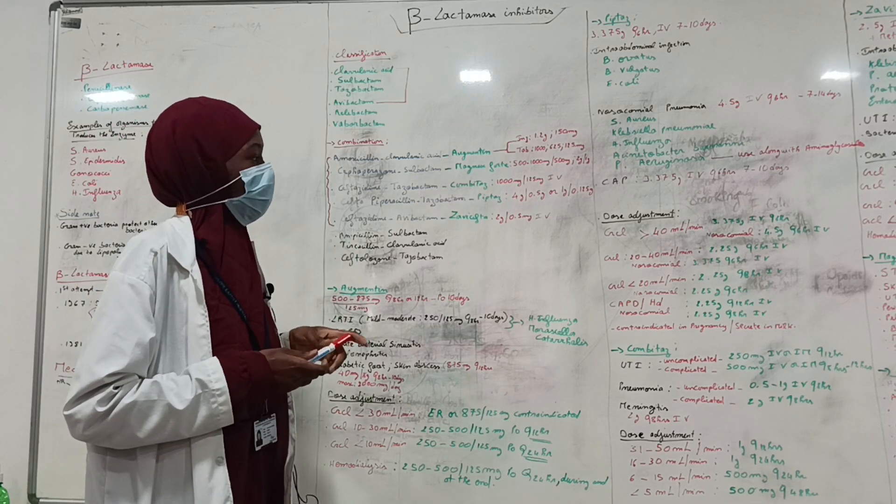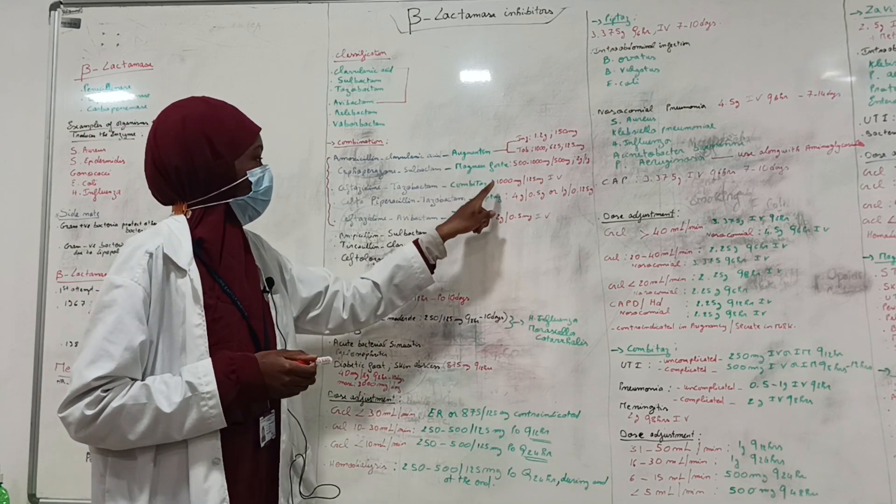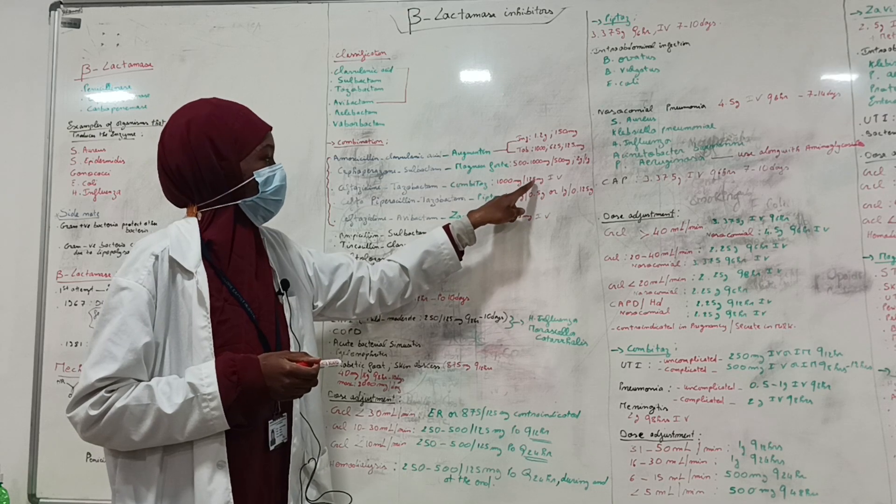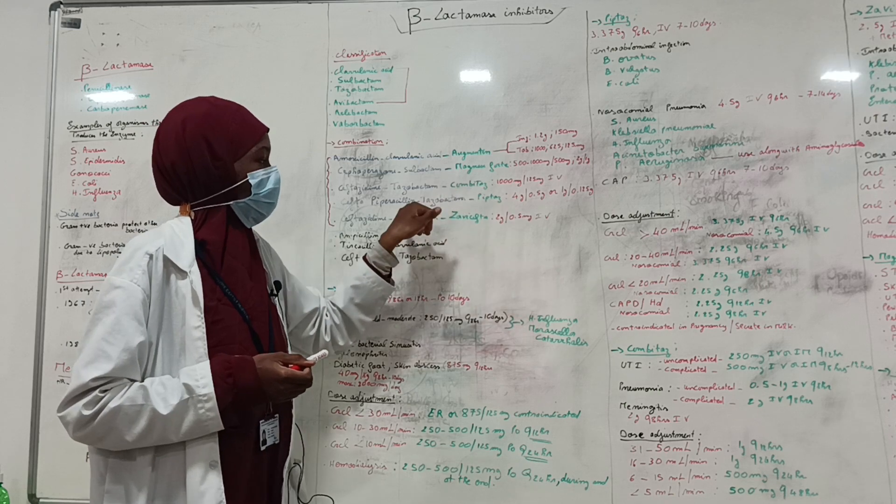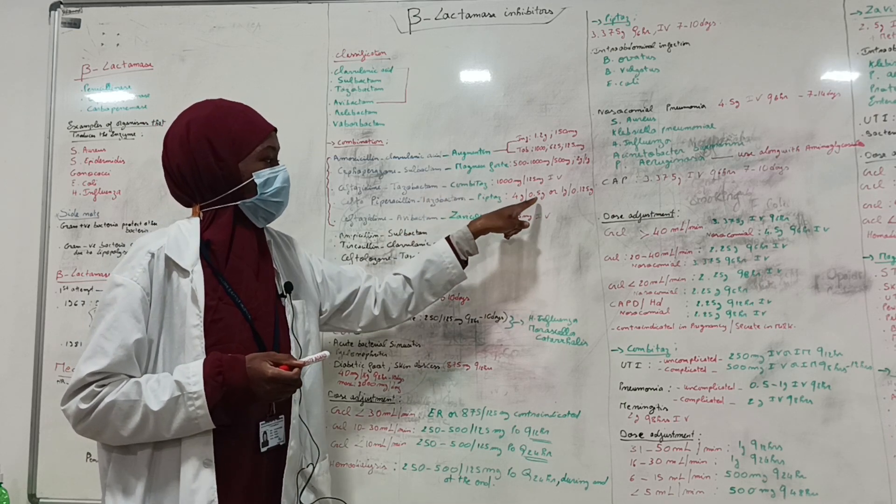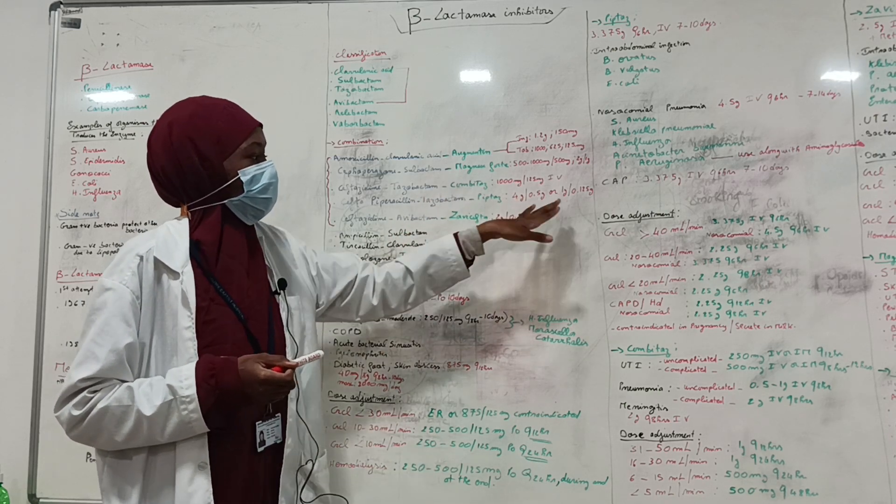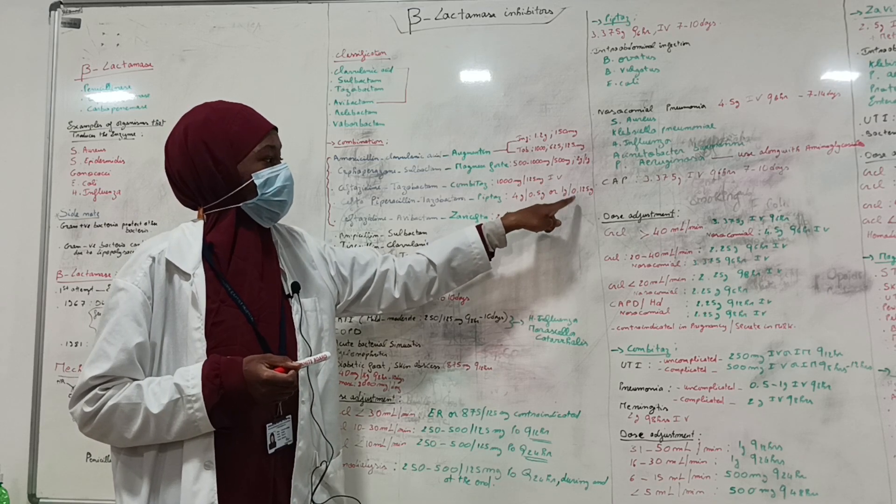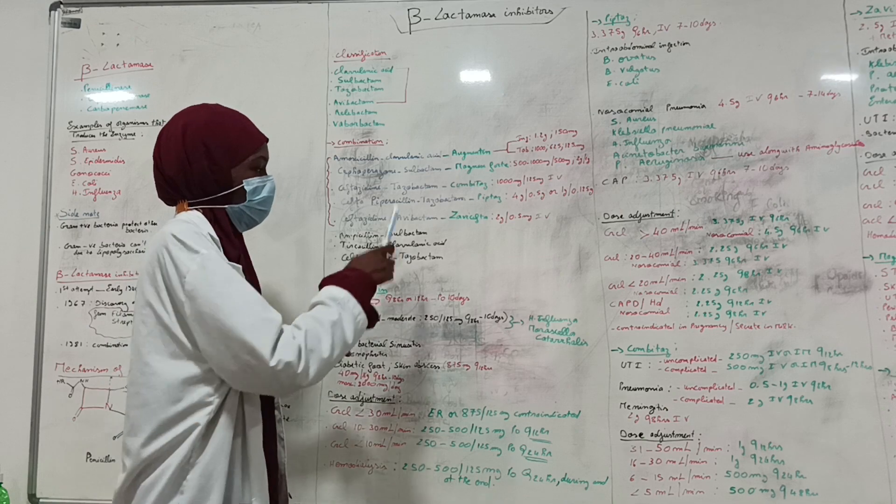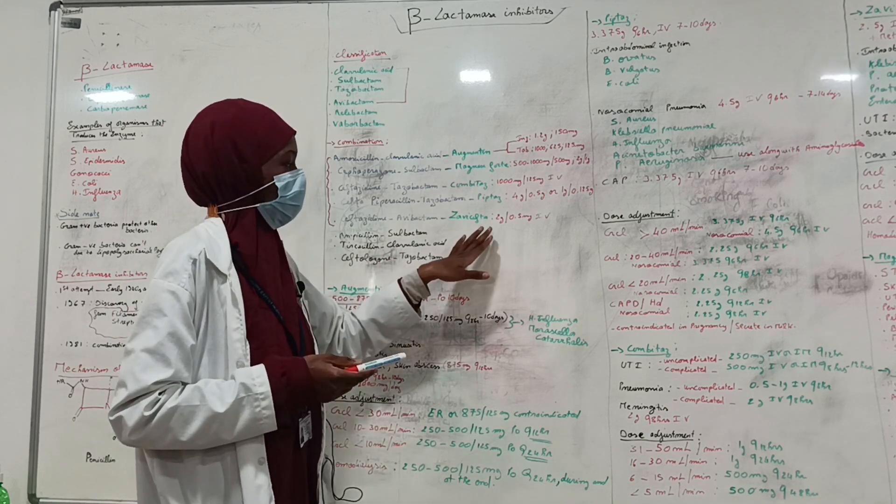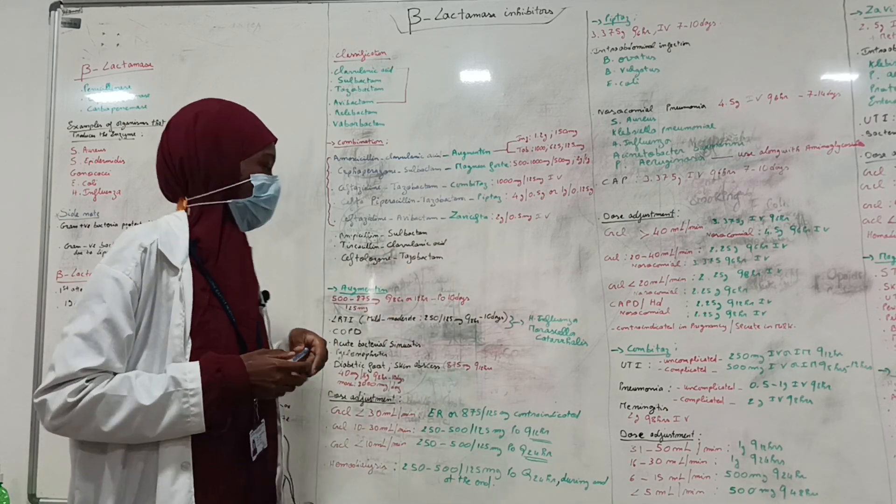Combitaz is available IV as 1,000 mg for ceftazidime dose and 125 mg for tazobactam dose. Piperacillin, 4 gram for piperacillin dose, tazobactam 0.5 gram. It's also available as 1 gram by 0.125 gram. The last one, ceftazidime and avibactam, available as a dose of 2 gram by 0.5 gram IV.